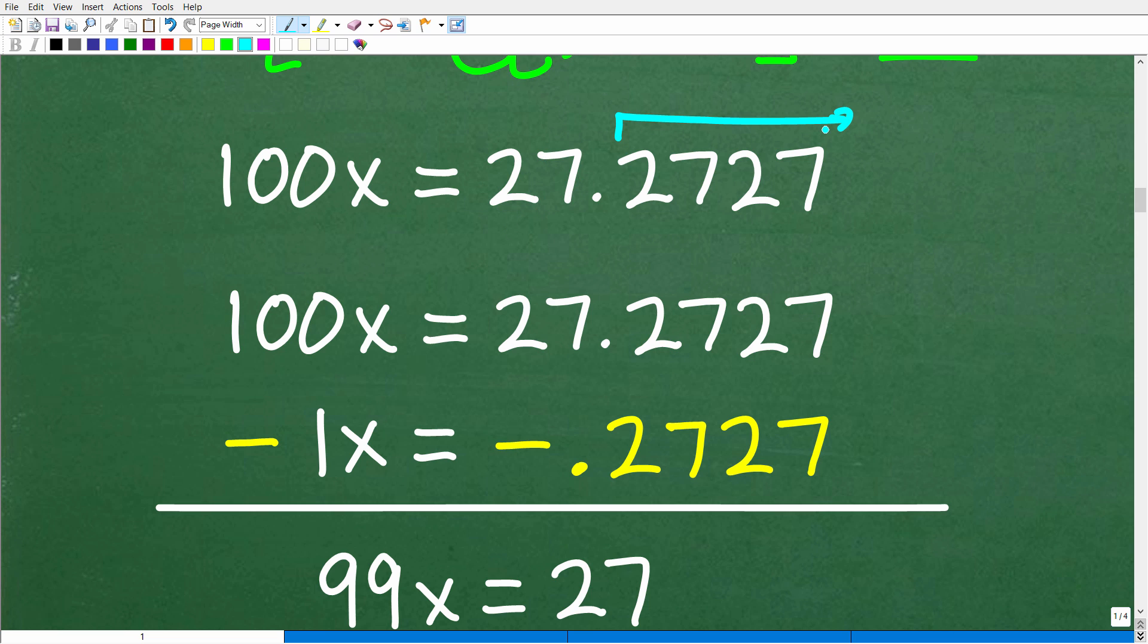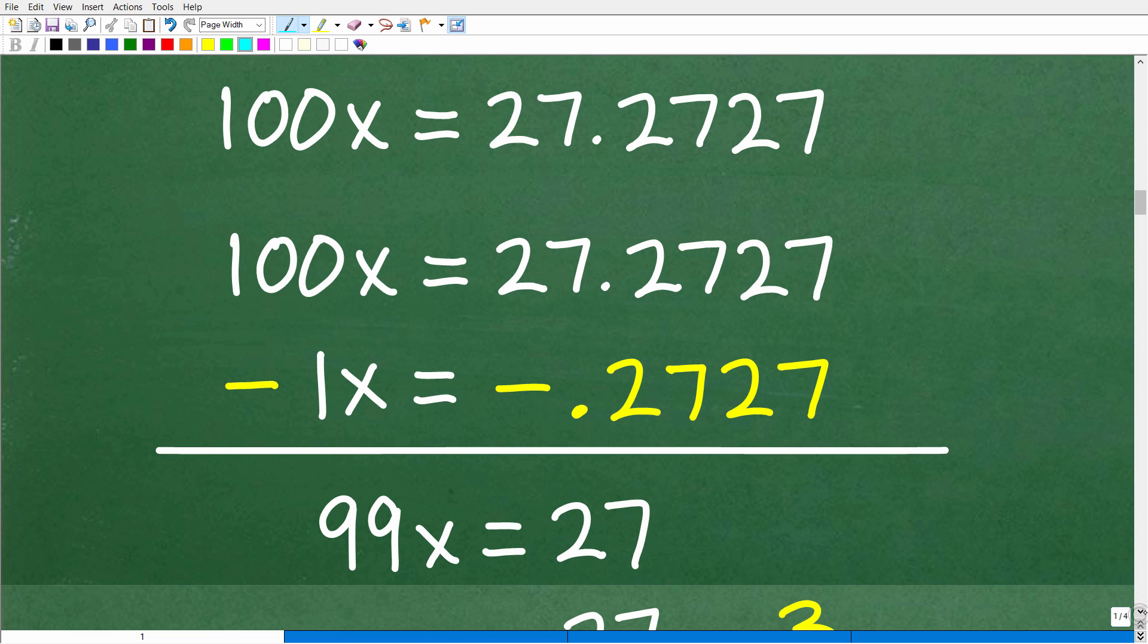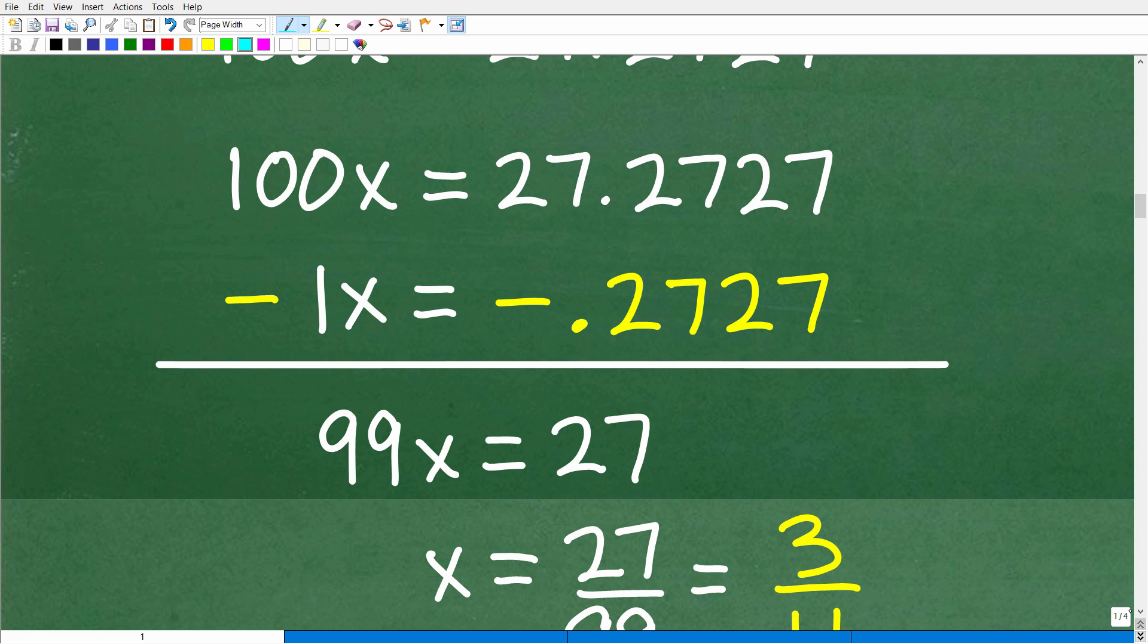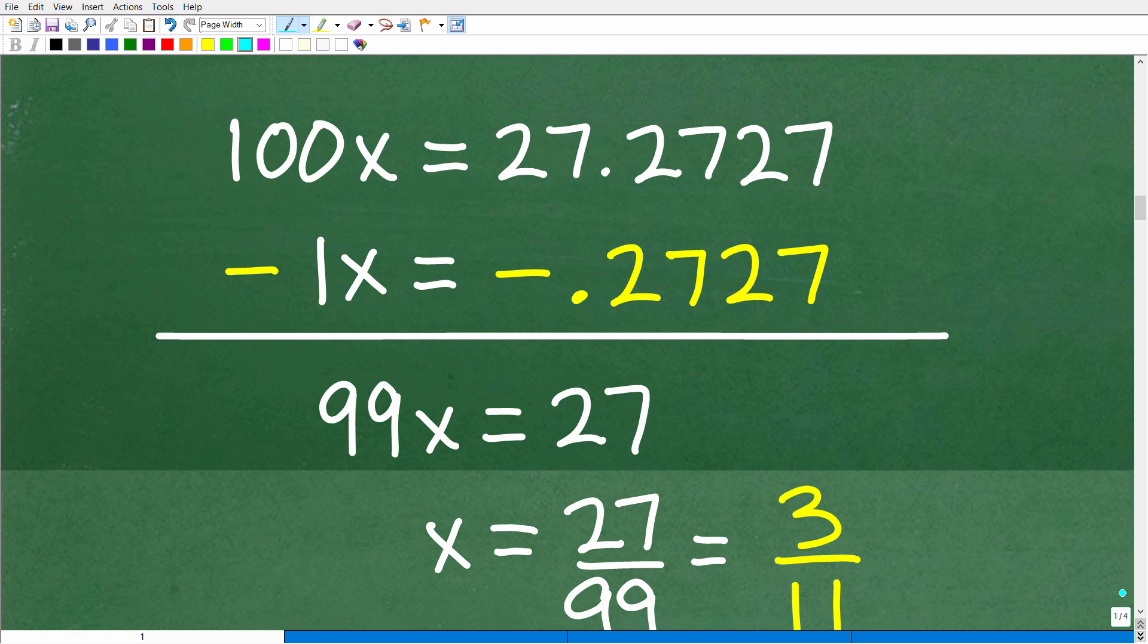So it's 27.2727, and what we're going to do is effectively truncate, we're going to get rid of all these repeating 27s. So how can we do this? We're going to subtract this x, our original equation, from both sides of the equation. Remember, x is equal to 0.2727. So we're going to subtract this, and we are dealing with an equation. This is equal to this, so we're subtracting the same value from both sides of the equation.